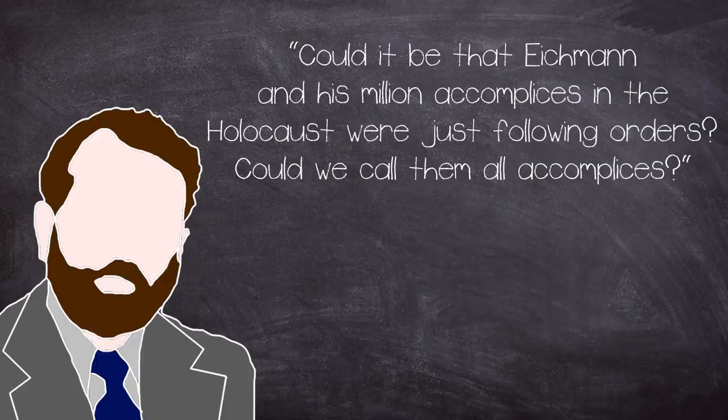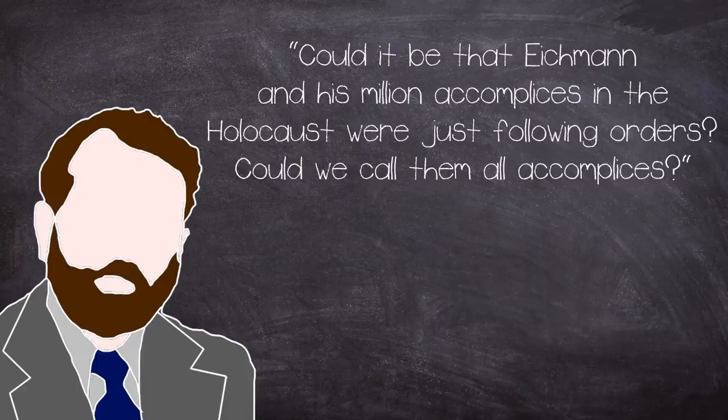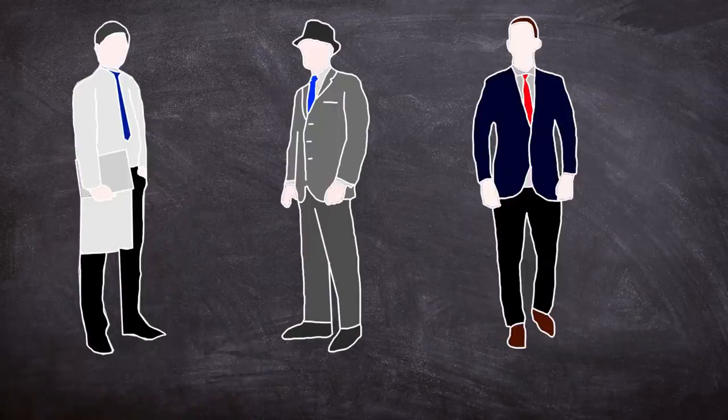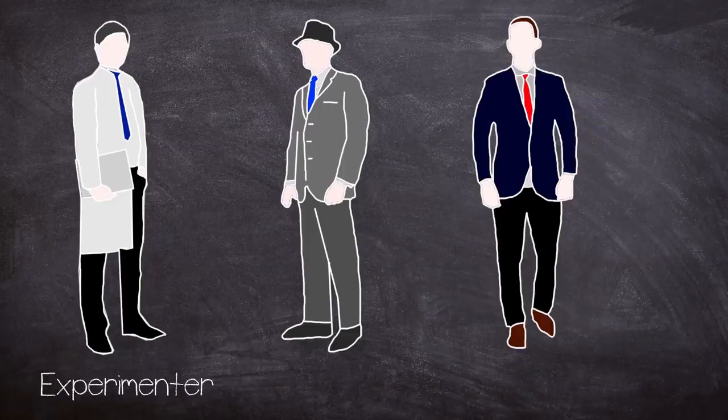Milgram would later say in 1974, when explaining the experiment: Could it be that Eichmann and his million accomplices in the Holocaust were just following orders? Could we call them all accomplices? The experiment was pretty simple and would make use of three people: the experimenter who was in charge of the session, the teacher, a volunteer for a single session, and a learner.